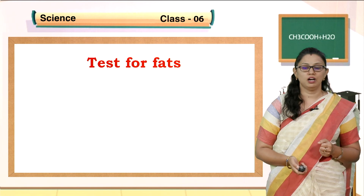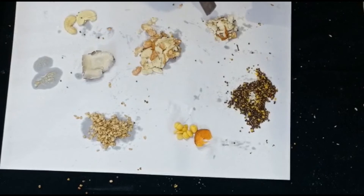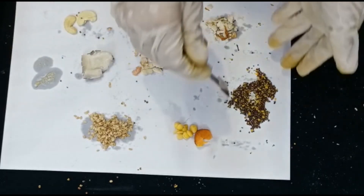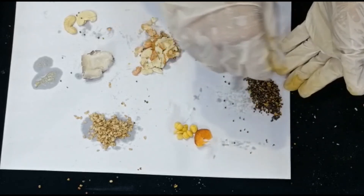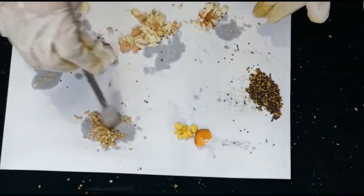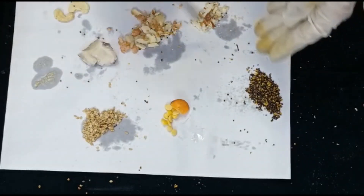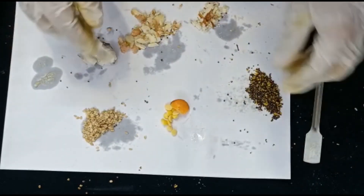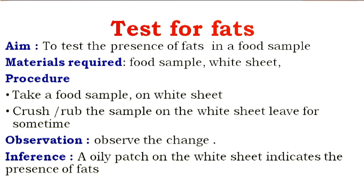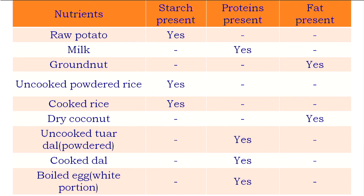Next, we will test the nutrient called fats. I have taken mustard, almond, groundnut, coconut, cashew nut, sesame and cooked vegetables. The oily patches left on a white sheet from these food sources indicate the presence of fats. All other sources of fats leave patches on the white sheet, which indicates the presence of fats.